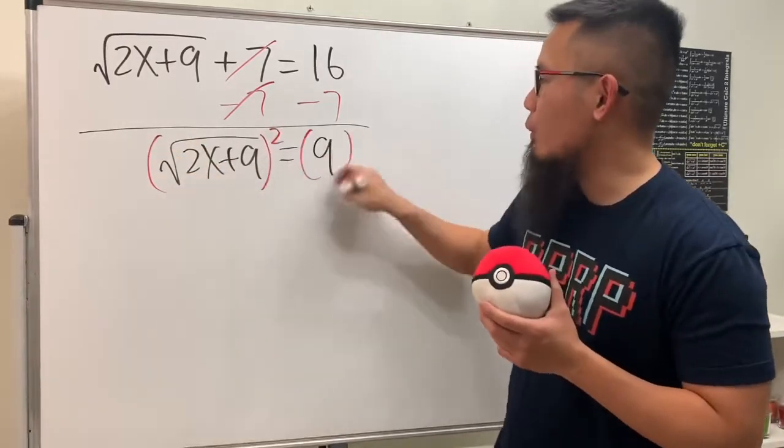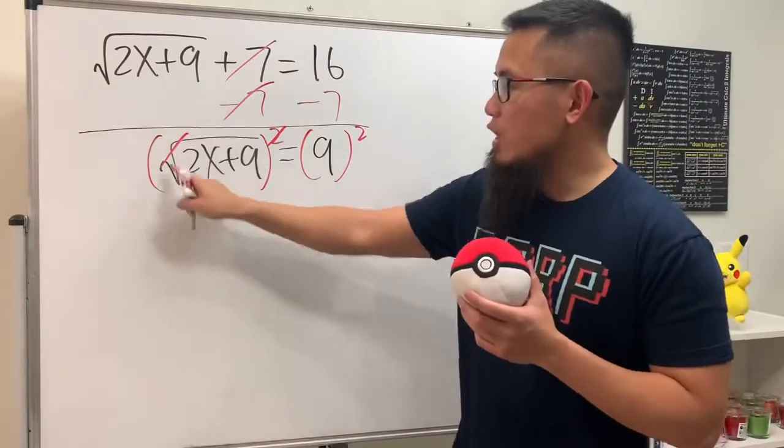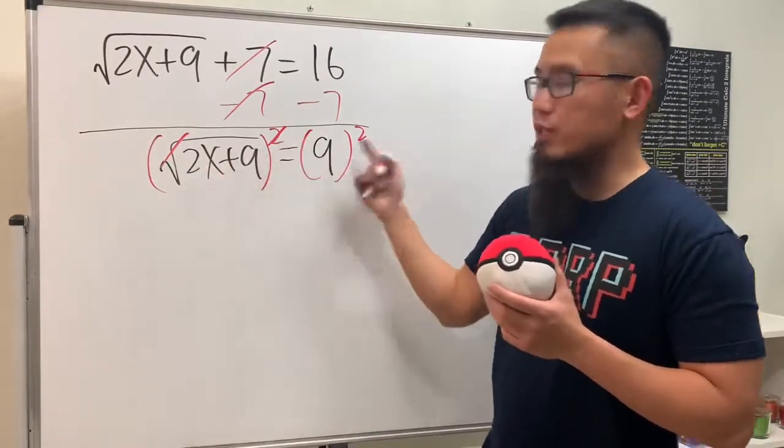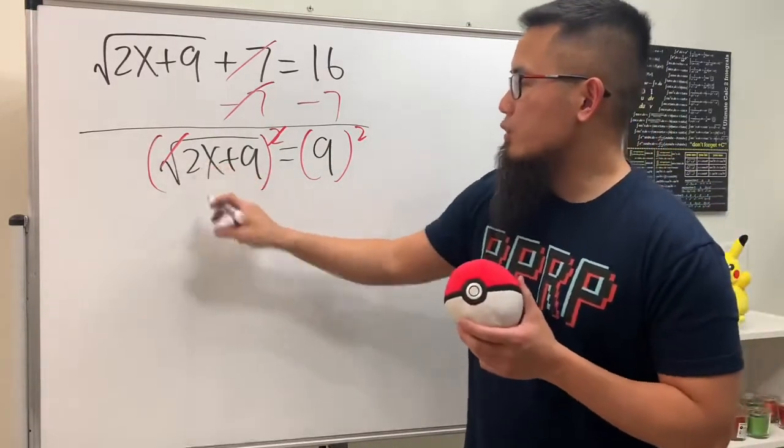Because that way this and that can be cancelled. And if we have the cube root here, then just raise both sides to the third power, et cetera. Anyway, we will just get 2x plus 9, that's equal to 9 squared, which is equal to 81.